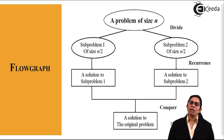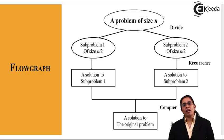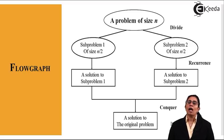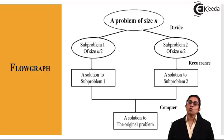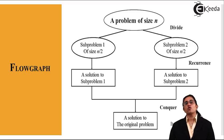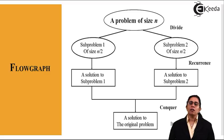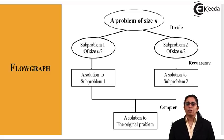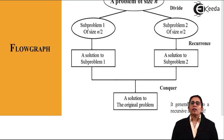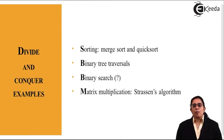Divide and conquer strategy generally leads to a recursive algorithm. If any problem can be divided into n/2 sub-problems and each sub-problem leads to a definite solution, then we can join the two sub-solutions to give us a final solution to the original problem.